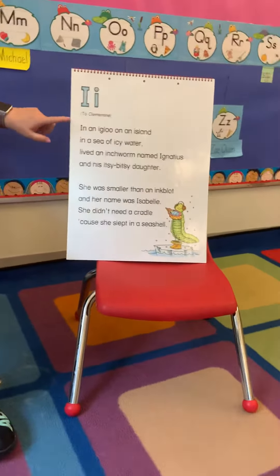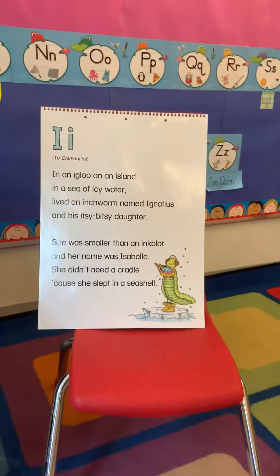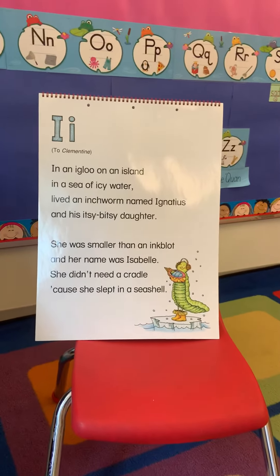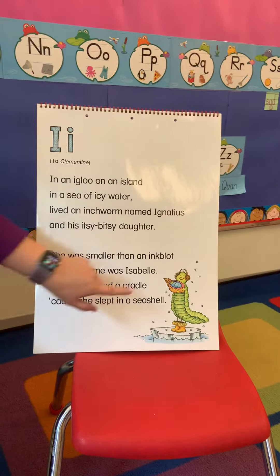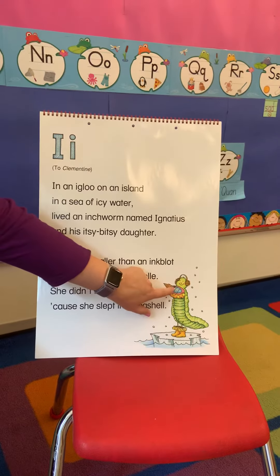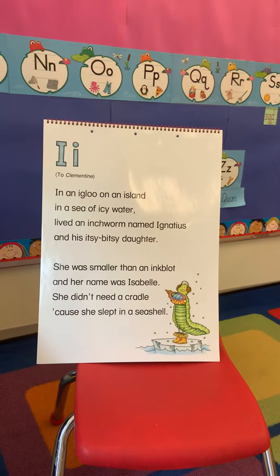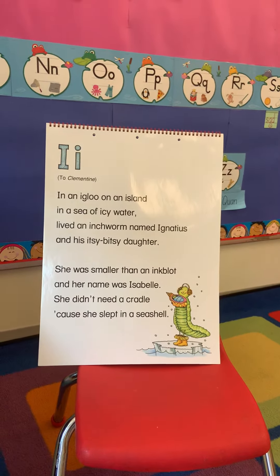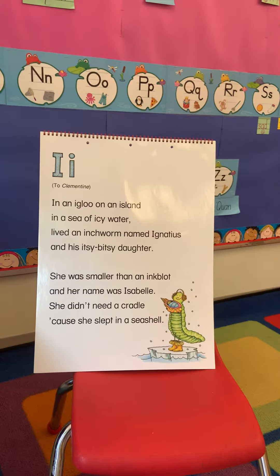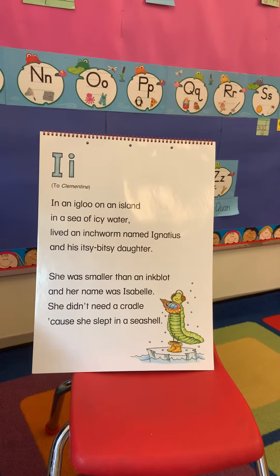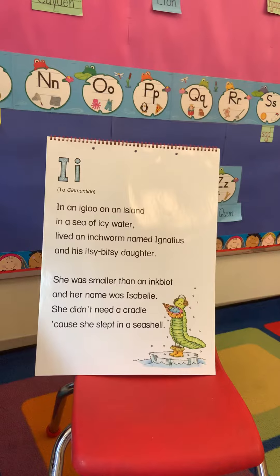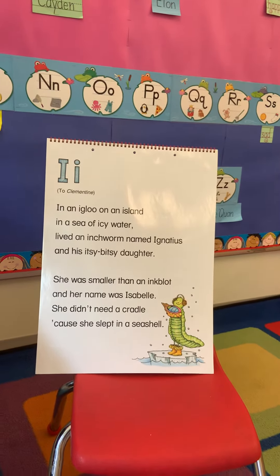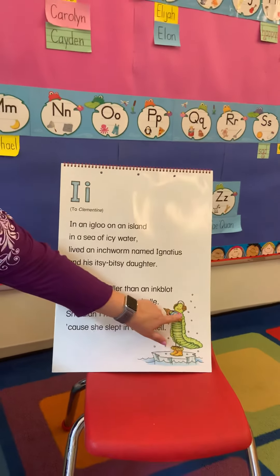In an igloo on an island in a sea of icy water, lived an inchworm named Ignatius and his itsy bitsy daughter. She was smaller than an inkblot and her name was Isabel. She didn't need a cradle cause she slept in a seashell.